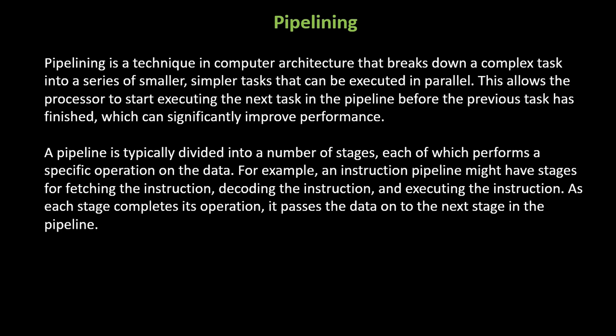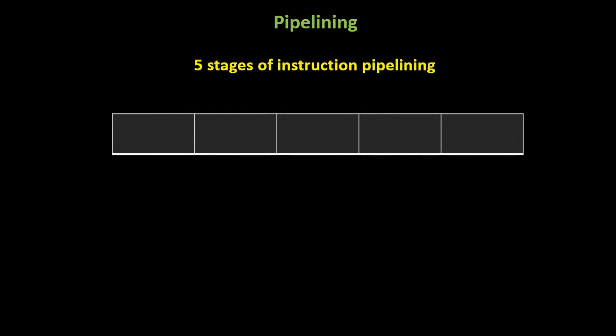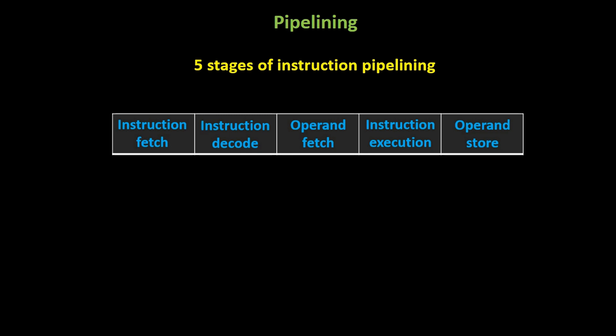Now that we understand RISC instruction sets, let's explore the concept of pipelining. Pipelining allows for the efficient execution of instructions by overlapping different stages of instruction processing. It is a technique used to improve the performance of a processor by overlapping the execution of multiple instructions. The instruction is divided into five subtasks, each of which is executed in a separate stage of the pipeline. This allows the processor to start executing the next instruction before the current instruction has finished, which can significantly improve the throughput of the processor. The five stages of instruction pipelining are: Instruction Fetch, Instruction Decode, Operand Fetch, Instruction Execution, and Operand Store.